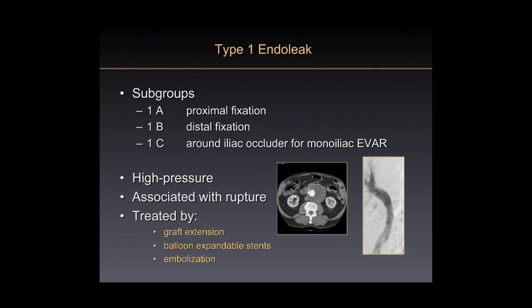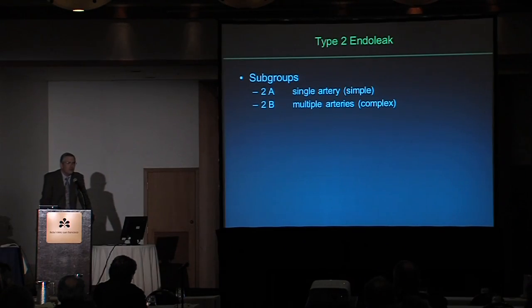I won't focus on type 1 endoleaks. Everyone recognizes they're important: the aneurysm sac is pressurized, it turns into a windsock, it increases the chance of acute rupture, and treatment is generally returning to the suite for an extension or placement of a balloon expandable stent. These should be addressed in a semi-urgent fashion. What I want to focus on is type 2 endoleaks, which tend to be more problematic.